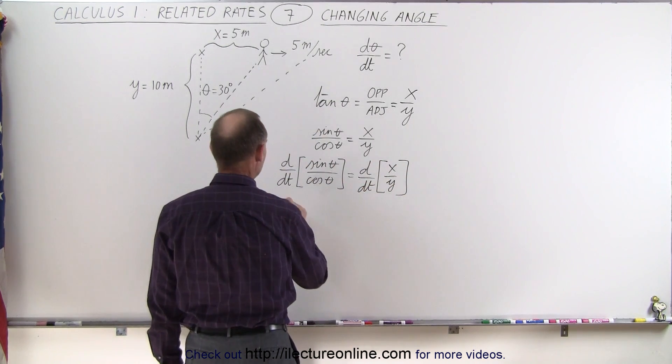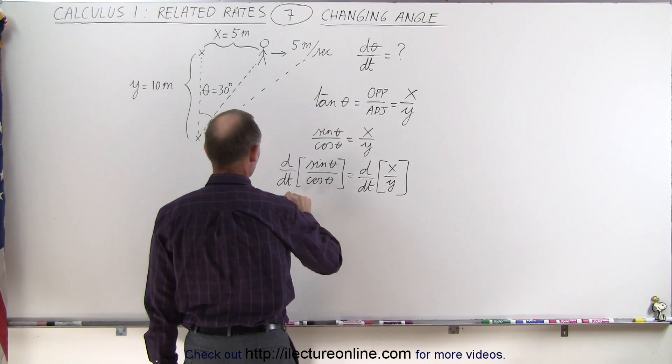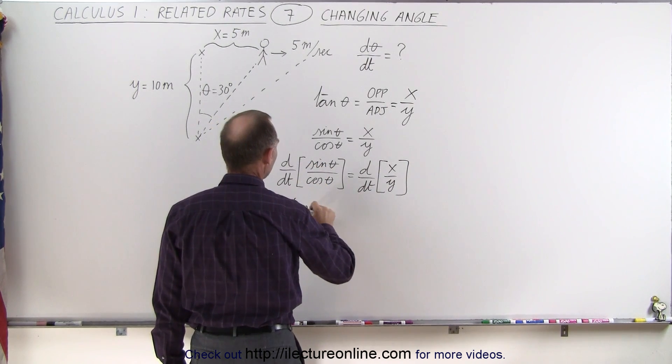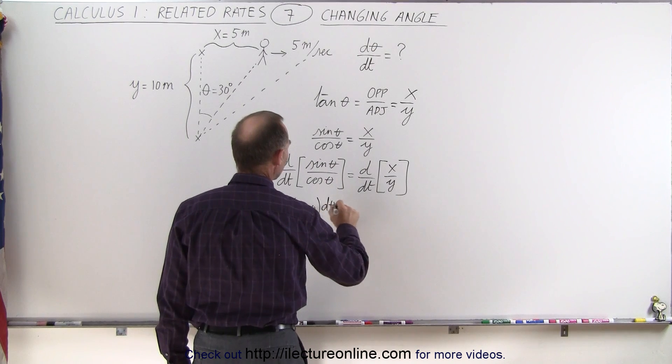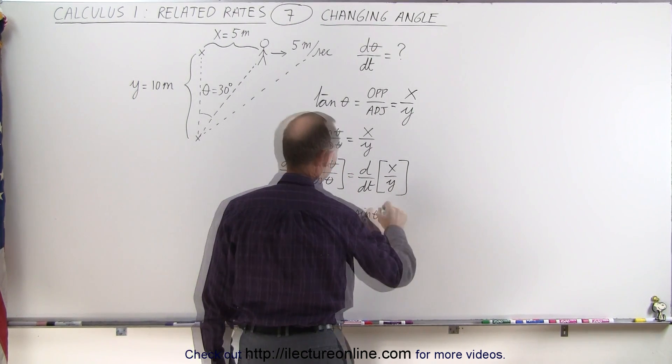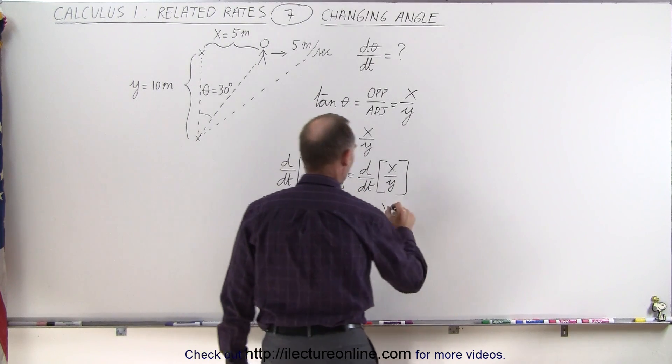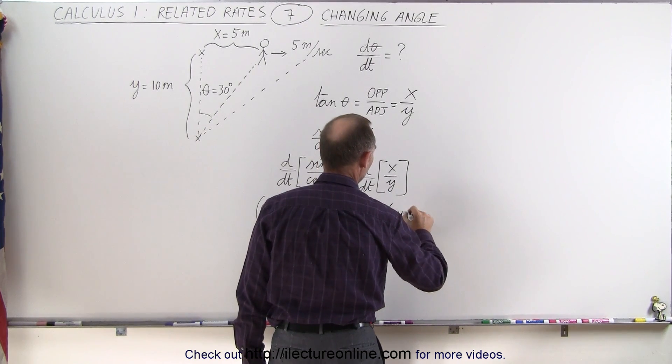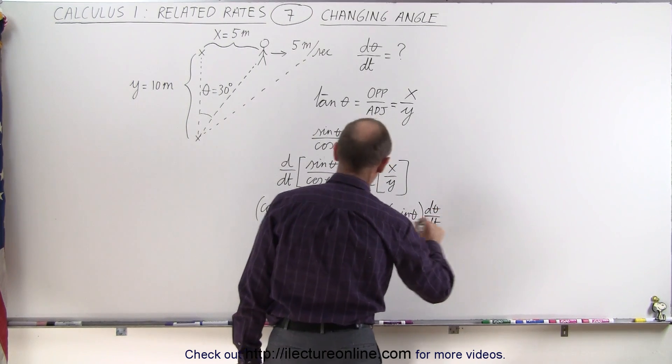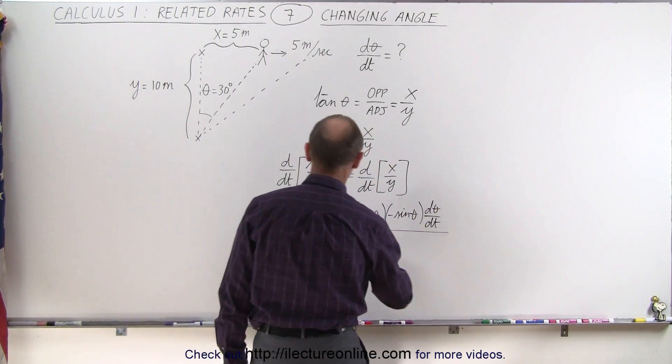Since it's a quotient, we take the denominator times the derivative of the numerator, which is the cosine of theta, times d theta dt minus the numerator times the derivative of the denominator, which is negative sine times d theta dt, all divided by the denominator squared.